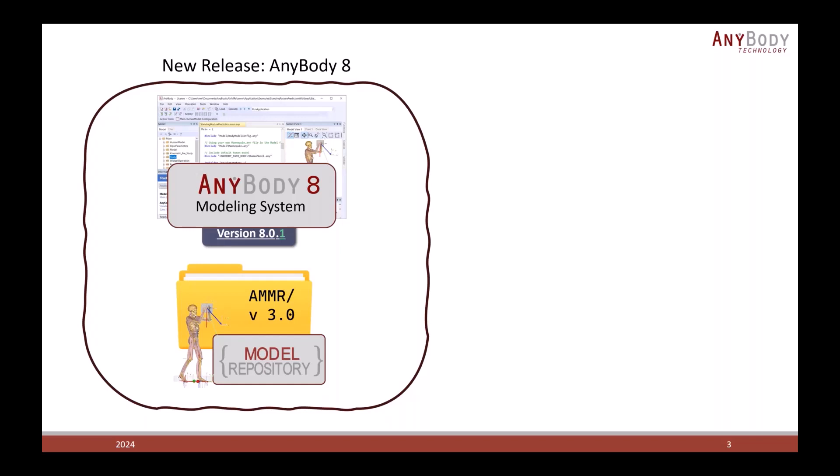So the new release, AnyBody 8, consists mainly of two parts. The first component is the modeling system itself. We also released version 8.0.1 today which has some important performance fixes. Another major part of the release is the model repository, the AnyBody Managed model repository version 3.0. When you download AnyBody, you get both of these components together.